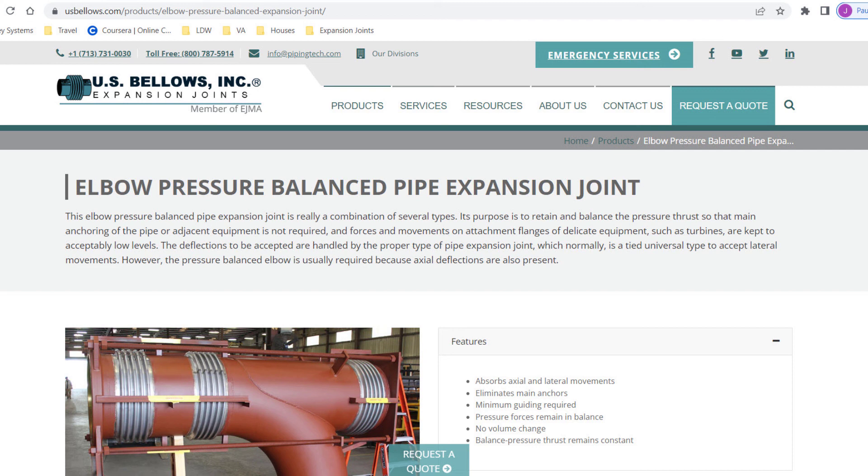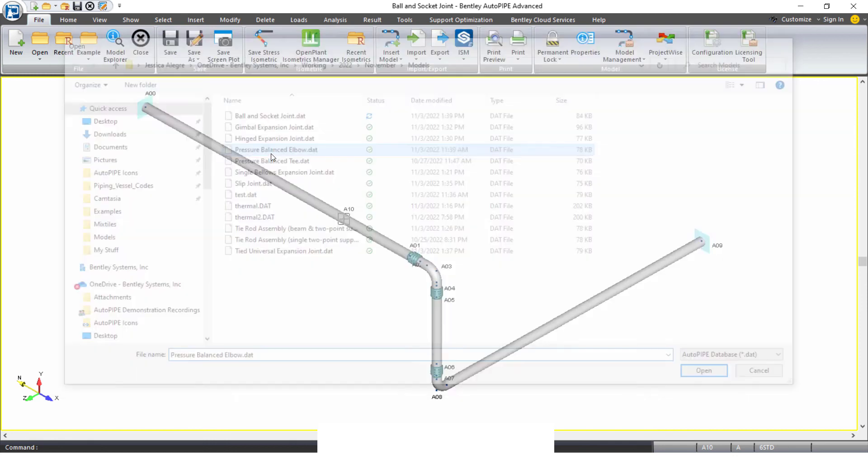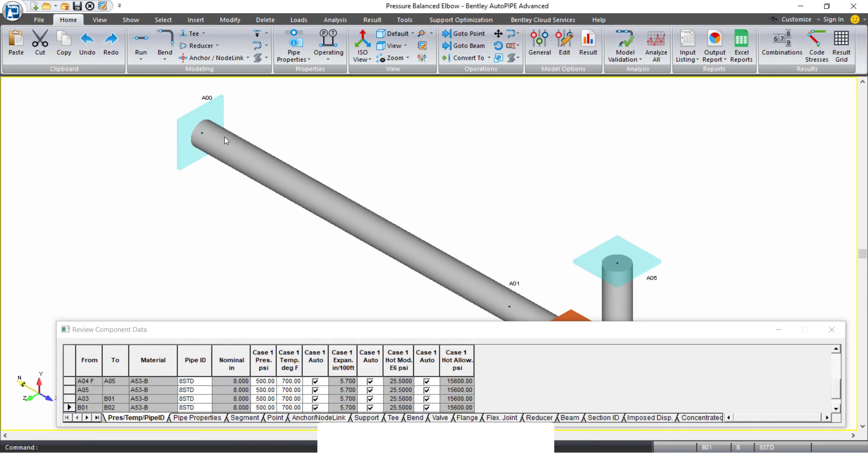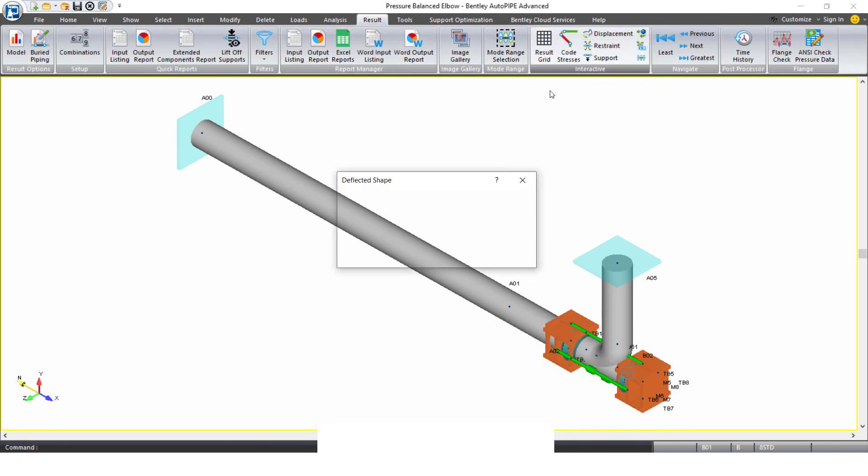Let's just jump to the model. You can do the elbow or the T. I'll just show the elbow here and we'll run an analysis and take a look at the displacements.